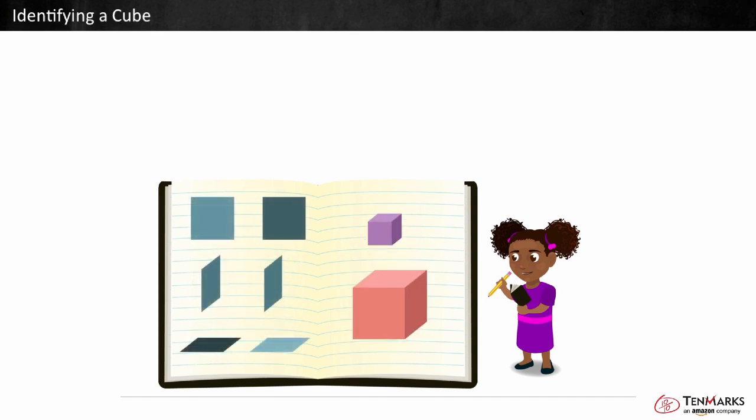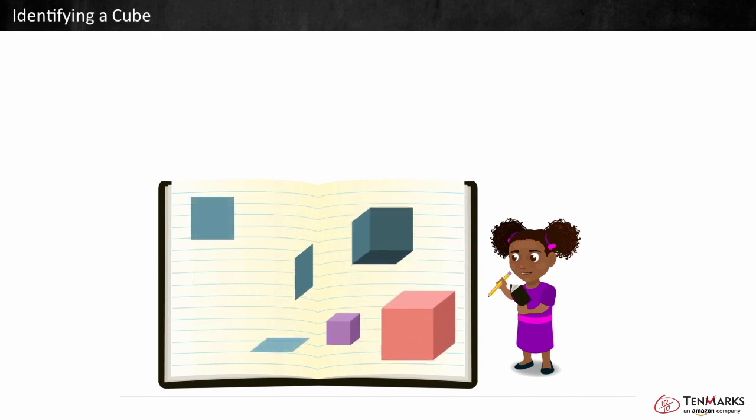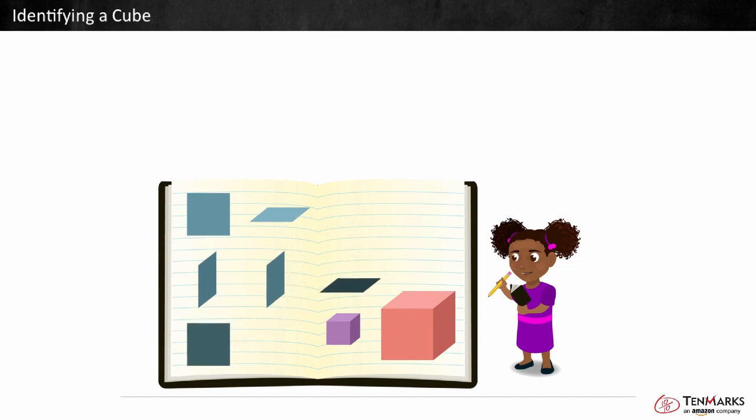What 2D shapes do you see on a cube? They look like squares. Each of these 2D shapes on a cube are faces. A cube has 1, 2, 3, 4, 5, 6 square faces.